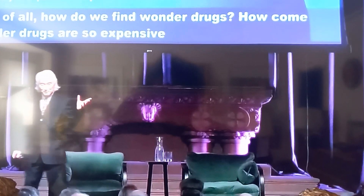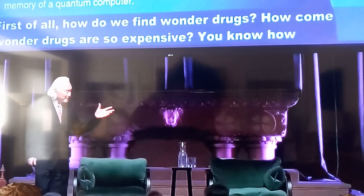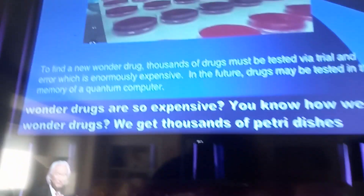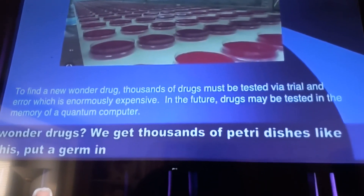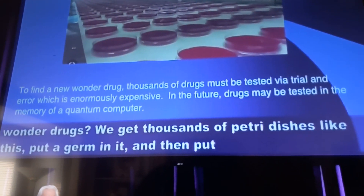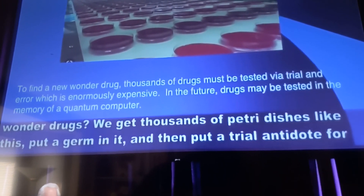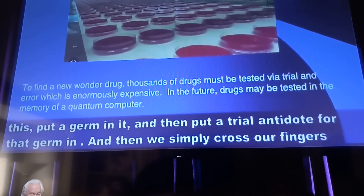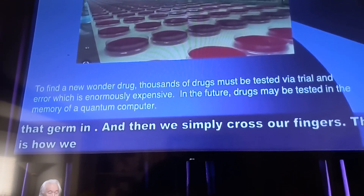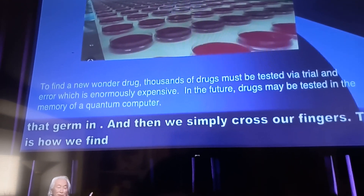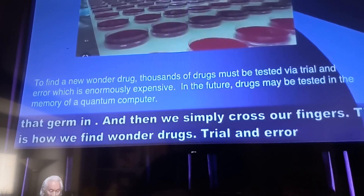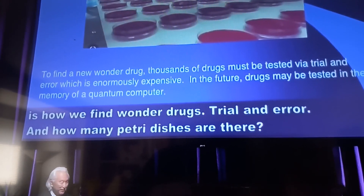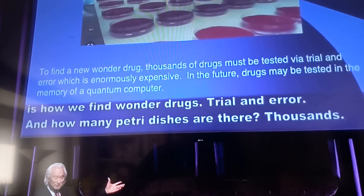You know how we find wonder drugs? We get thousands of petri dishes like this, put a germ in it, and then put a trial antidote for that germ in it. And then we simply cross our fingers. This is how we find wonder drugs — trial and error. And how many petri dishes are there? Thousands. Thousands of petri dishes.